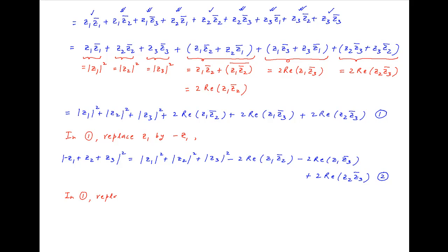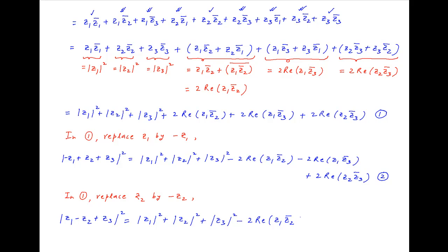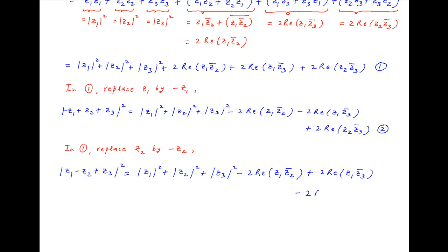Similarly, in result 1, replace z2 with minus z2. We get the square of the absolute value of z1 minus z2 plus z3 equals the square of the absolute value of z1 plus the square of the absolute value of z2 plus the square of the absolute value of z3, minus two times the real part of z1 times the conjugate of z2, plus two times the real part of z1 times the conjugate of z3, minus two times the real part of z2 times the conjugate of z3. Let's call this result 3.